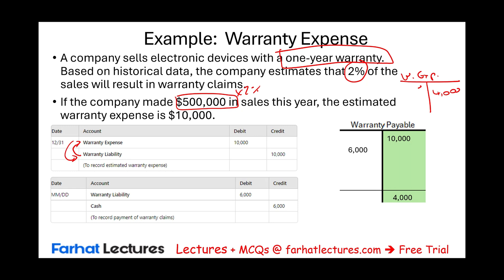We still need to discuss another type of liability: contingent liabilities. So we have certain liabilities, estimated liabilities, and contingent liabilities — all sorts of liabilities. Liabilities are generally not desirable, except unearned revenue, as we discussed.